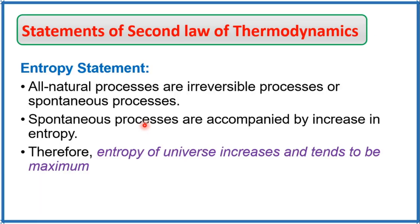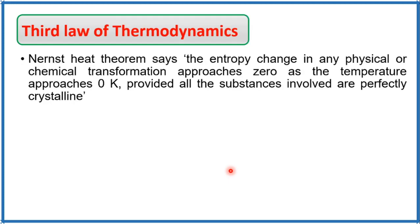The third statement is the entropy statement. Since all natural processes are spontaneous processes, entropy increases in them. Therefore, the entropy of the universe increases and tends to be maximum. These three statements — Clausius, Kelvin, and entropy — are the statements of the second law of thermodynamics.